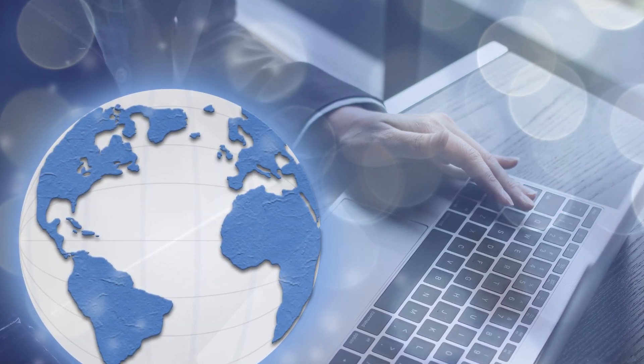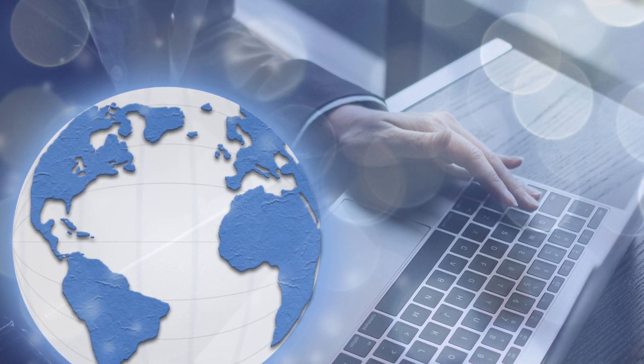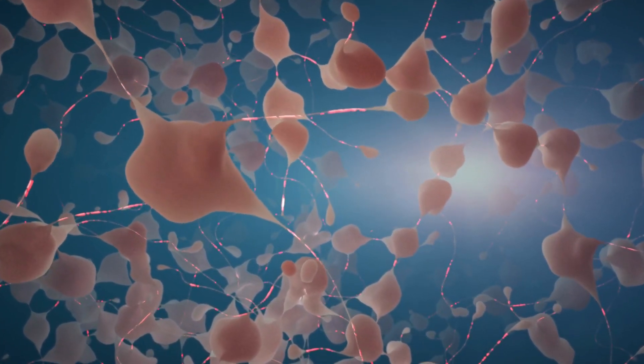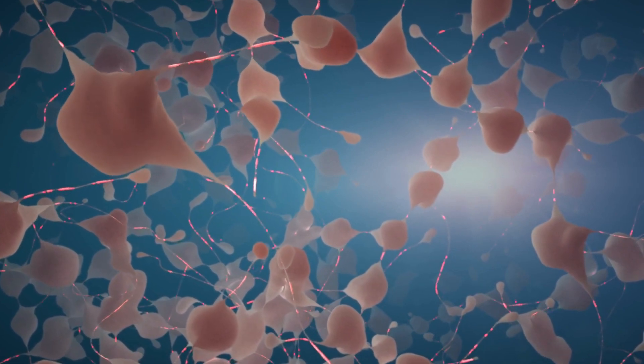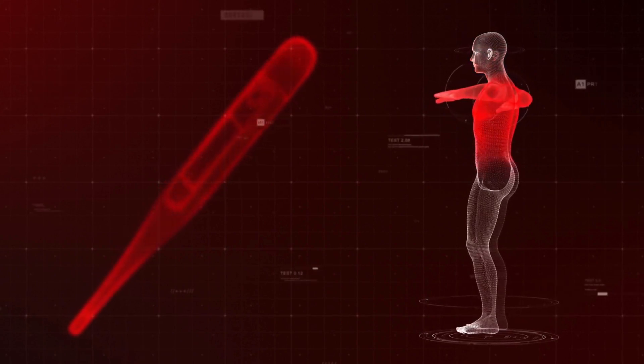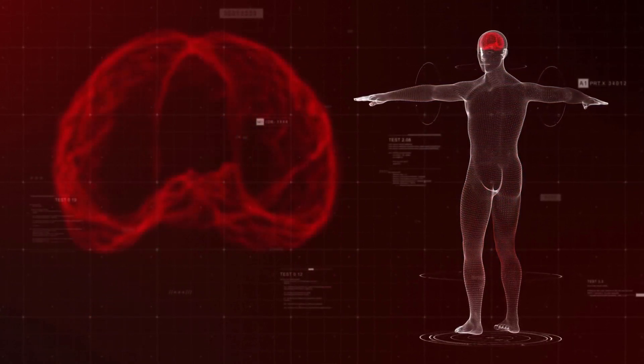The researchers created functional network maps of the basal ganglia and thalamus. These maps can help explain why people with neurological and psychiatric conditions exhibit different symptoms and why electrode placement in these areas can have varying results.